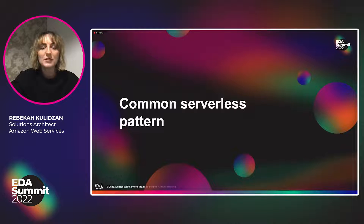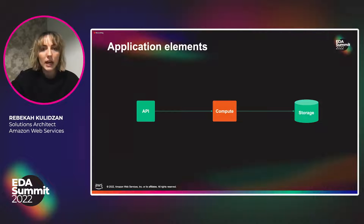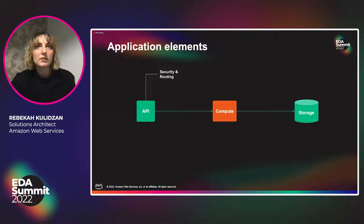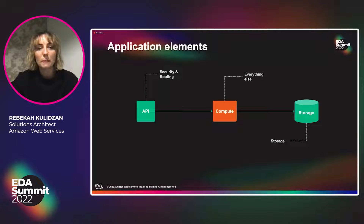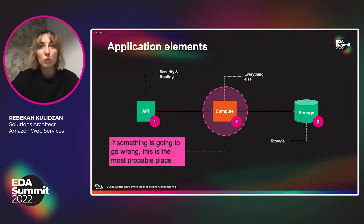Some common serverless patterns. Most customers that we speak to at AWS start off their applications this way: you'll have an API, some compute component, and some storage. This is typical in web applications and many others. Within your API, you may have some security and routing components. Storage hosts your data, and then everything else is in the middle. With these three components, if something goes wrong, it's most probably going to go wrong in the compute.